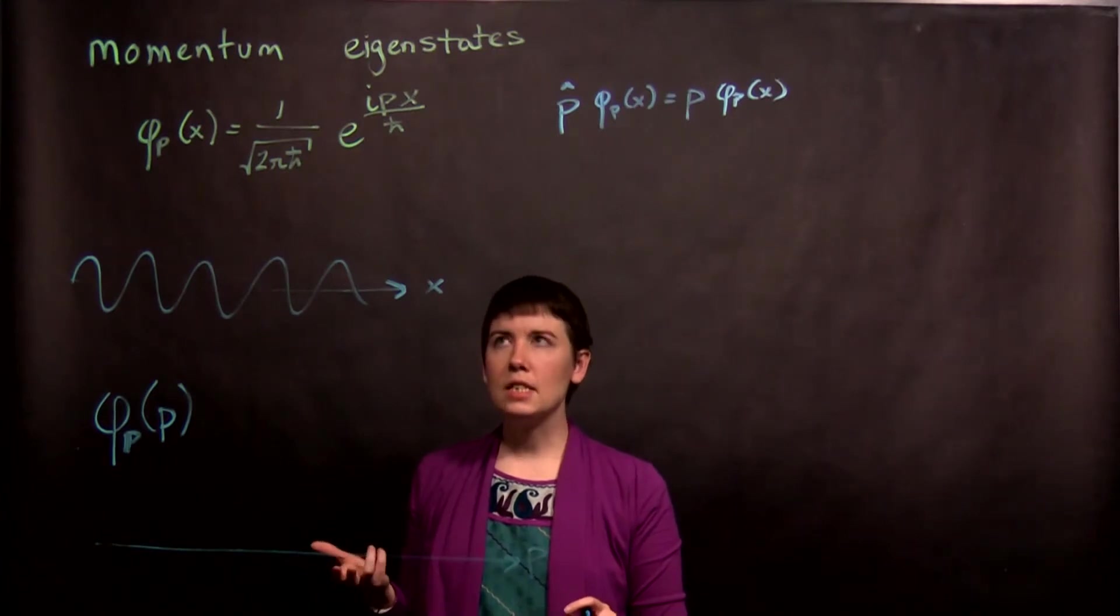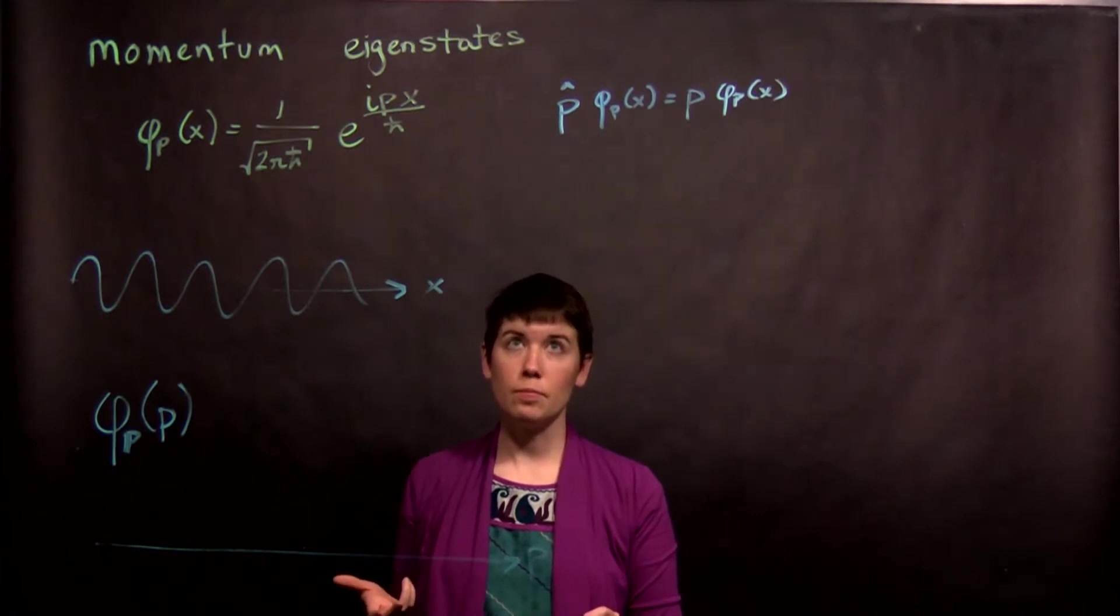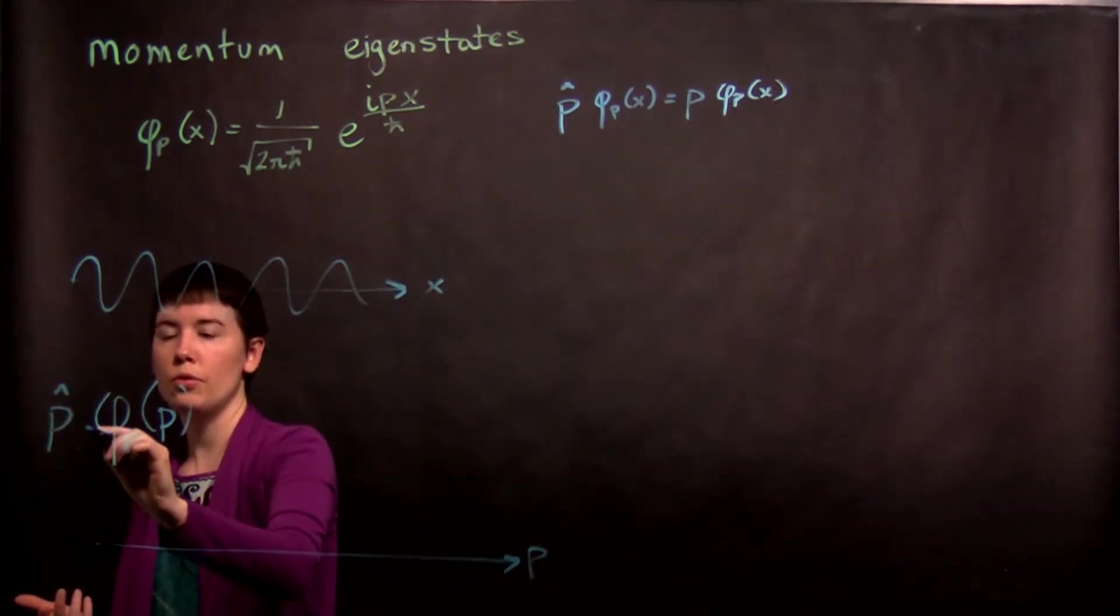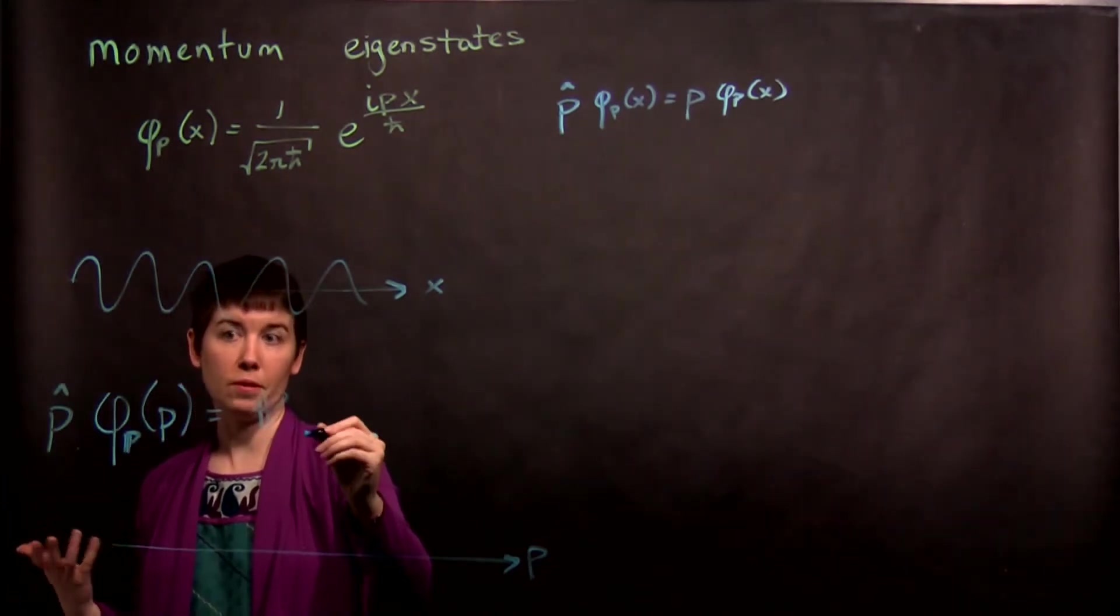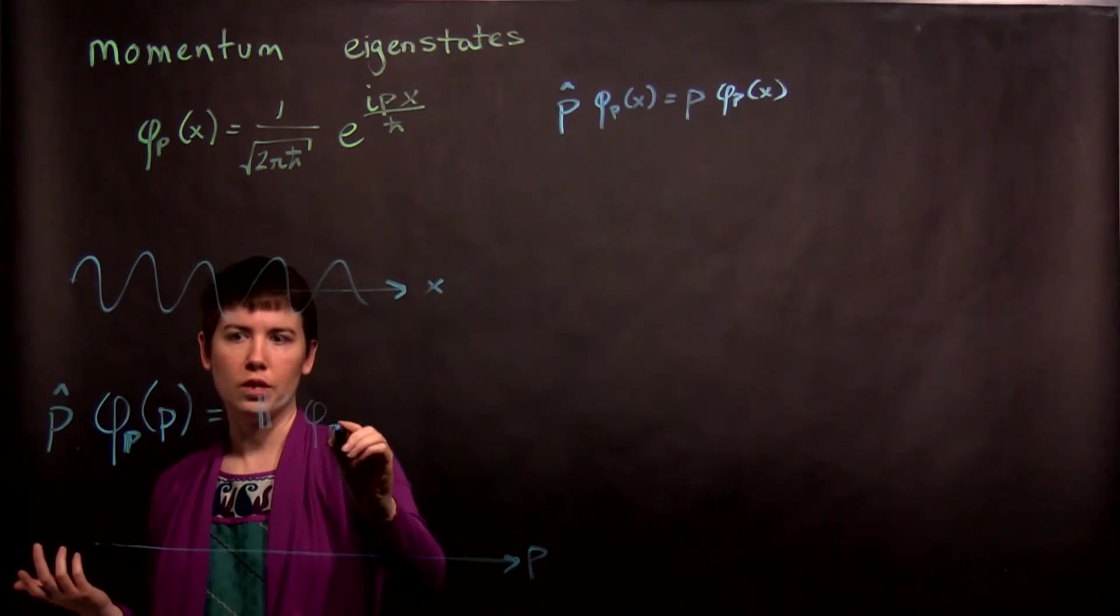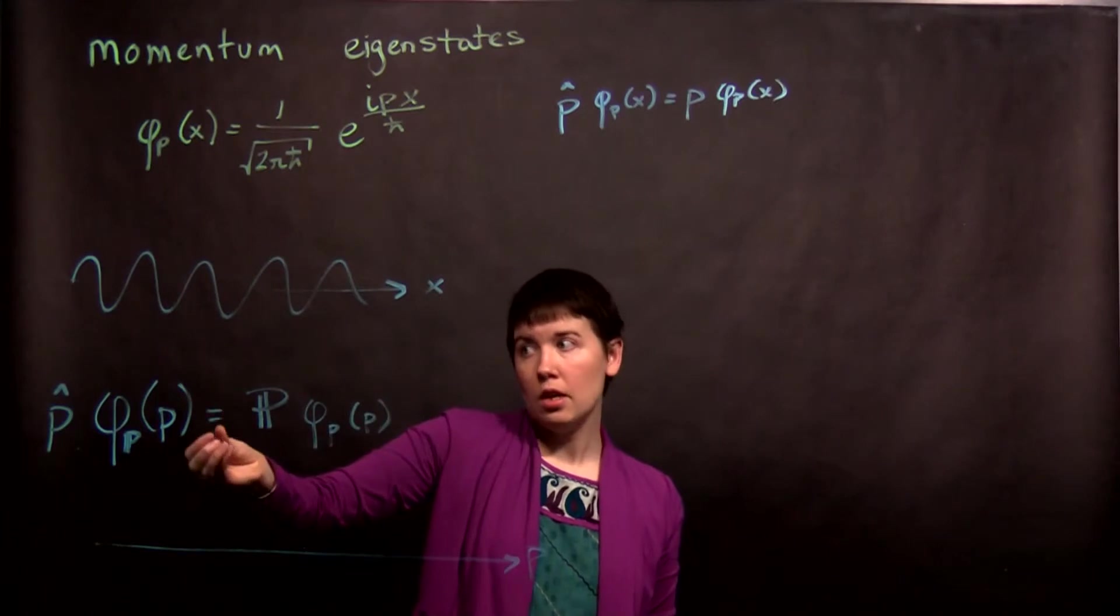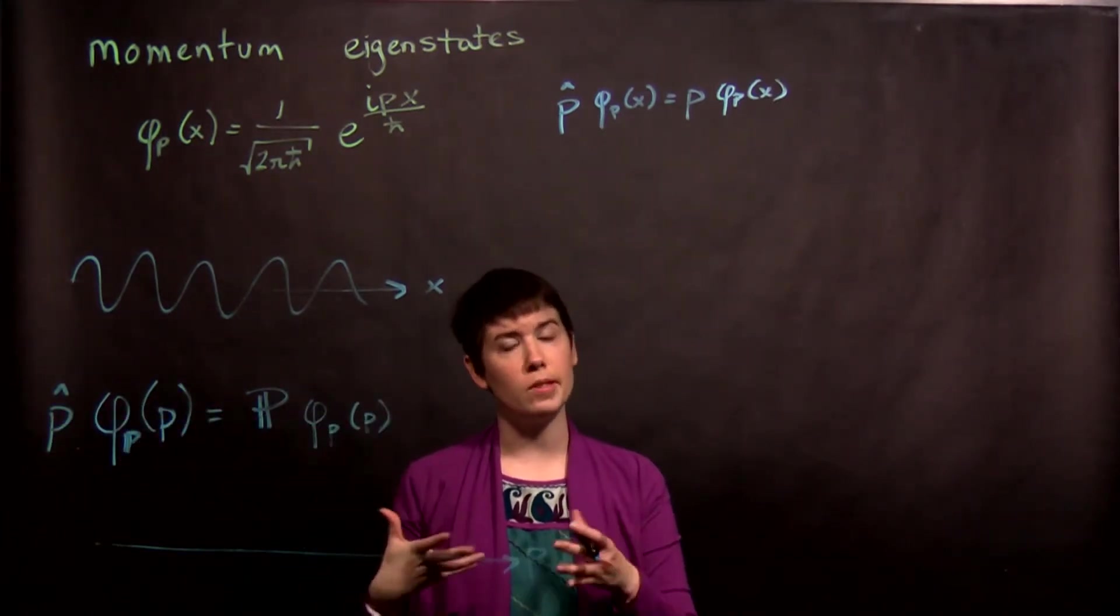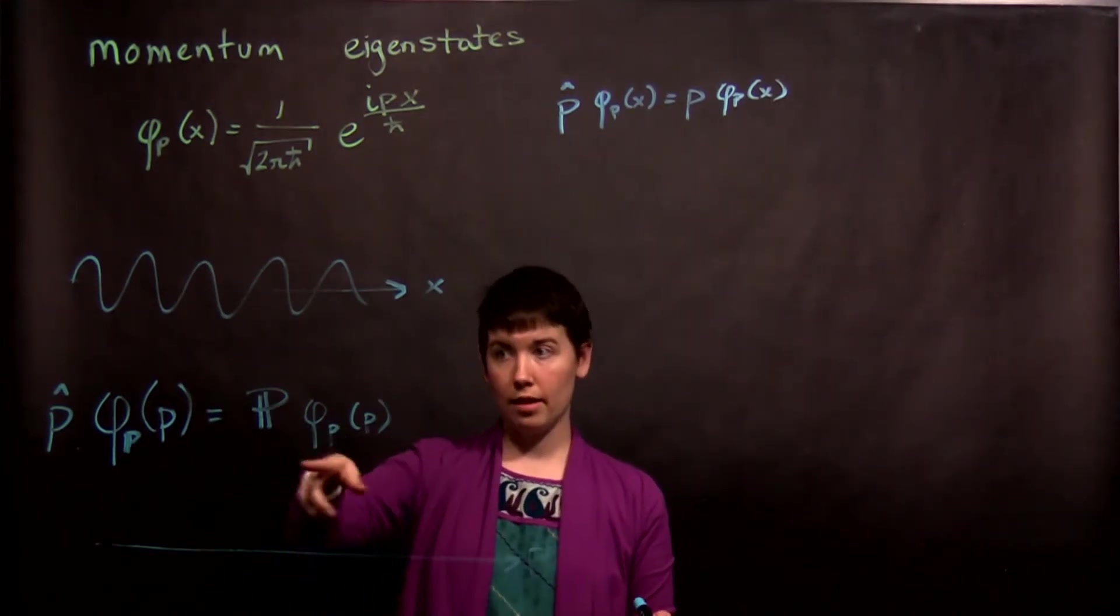So the idea is that this has a specific value of momentum. If I applied my momentum operator to it, then that would equal a very specific value of momentum, and you would get your state back. Now notice that I've now written it this way, but I'm not saying necessarily what my form is here, but I could still have a momentum eigenstate that has a very specific value of momentum. And I'm calling that fancy P.